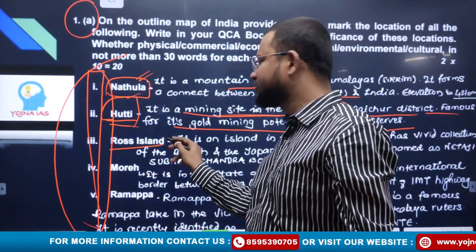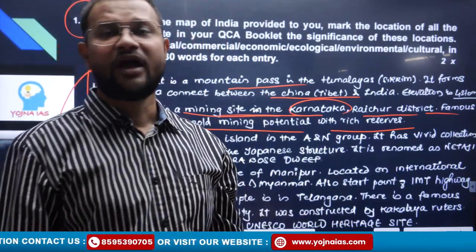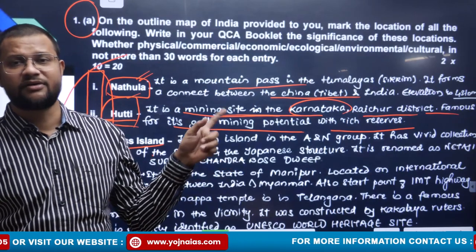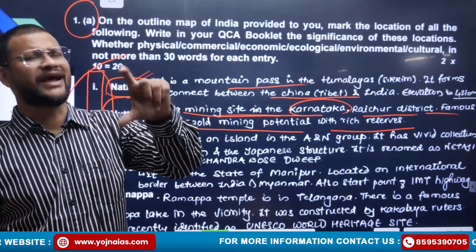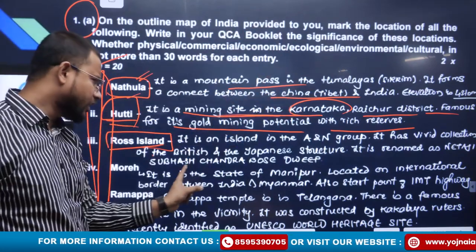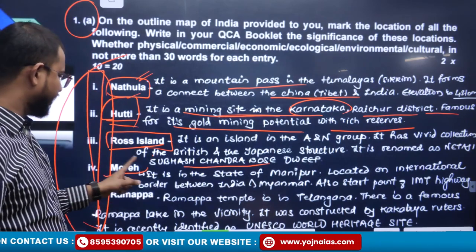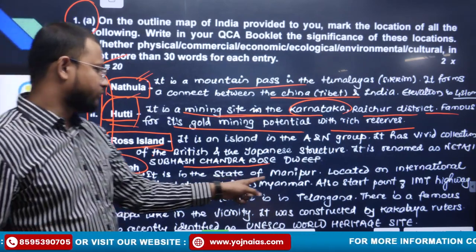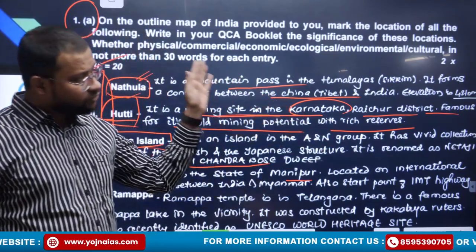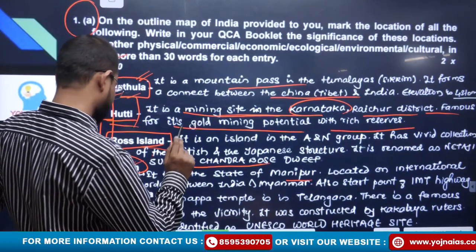Then Ross Island, Subhash Island — three islands where the nomenclature was changed by the Government of India in 2018–19. Ross Island, located in the Andaman and Nicobar, is now identified as Subhash Chandra Bose Island. Then Mora, which is in Manipur. From the northeastern states, you will find three to four locations — at least two to three locations will always be from the northeast.